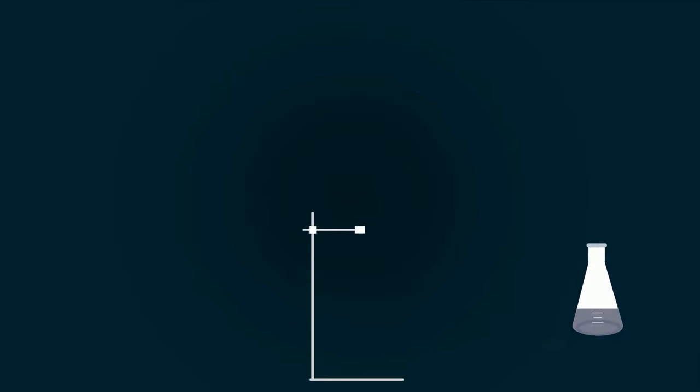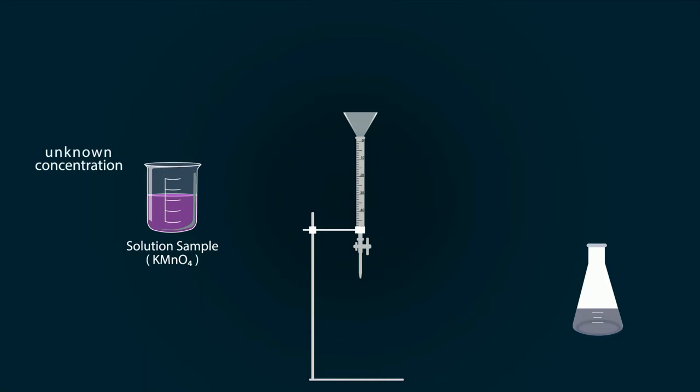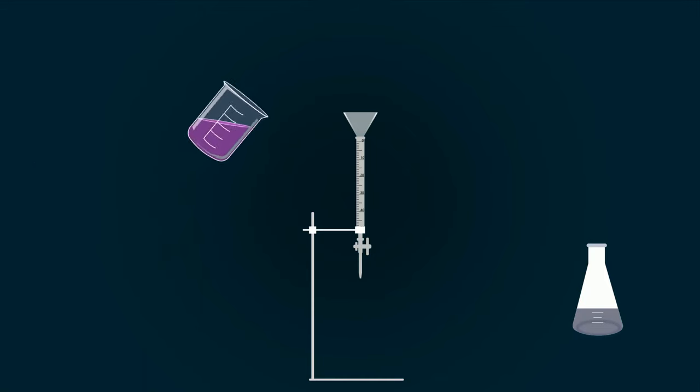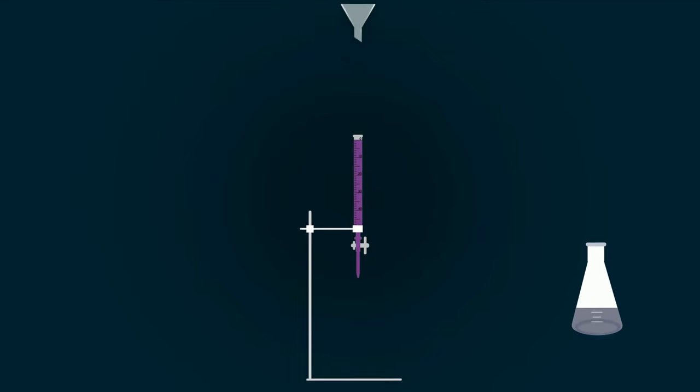Now take an iron stand and adjust the burette into it. Put the funnel on the top of the burette. Pour all the KMnO4 solution into the burette up to the zero point using the funnel.